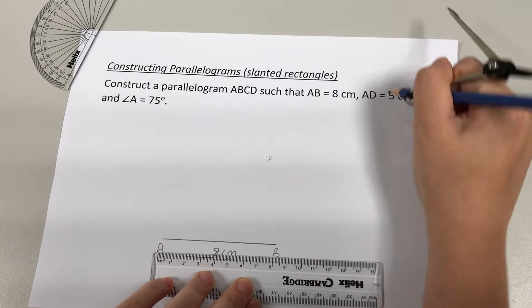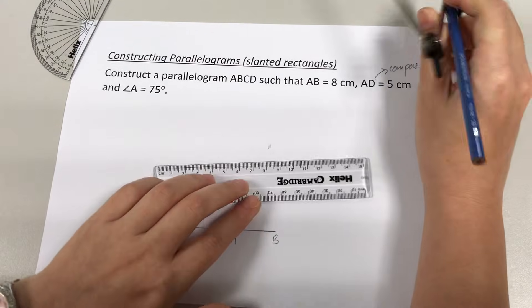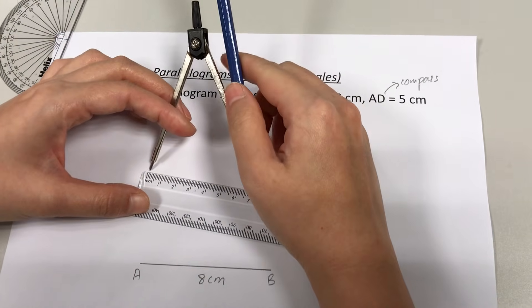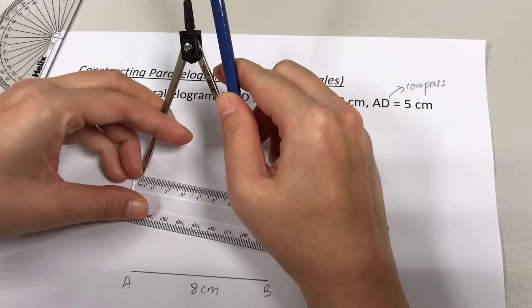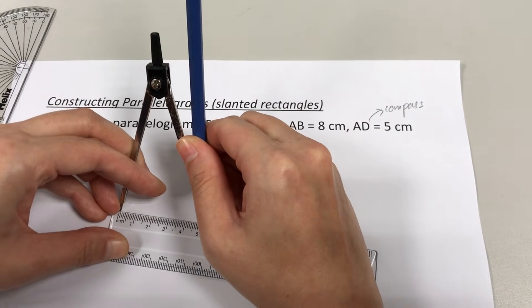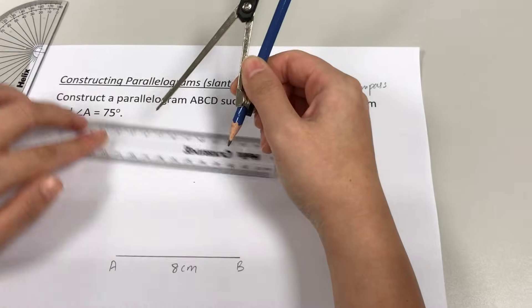AD 5 cm is to be drawn using your compass. So I'm going to prepare the compass to open it to 5 cm to prepare to draw line AD. I'm going to shift it to 5 cm. After I have opened it to 5 cm, I have to decide where I'm going to place my needle.